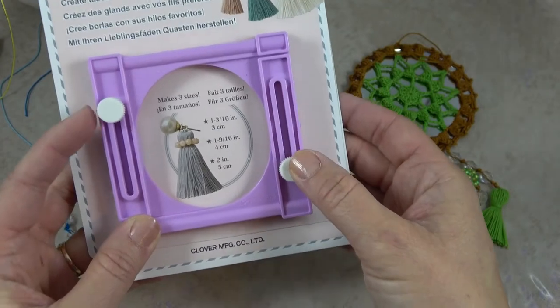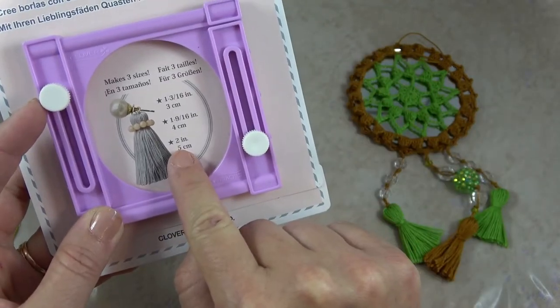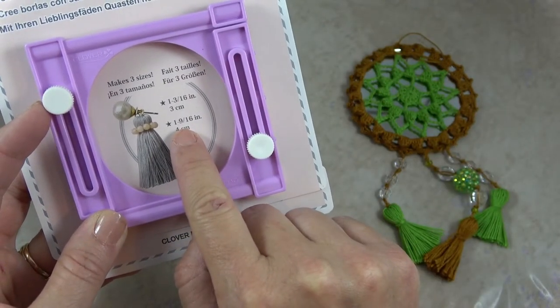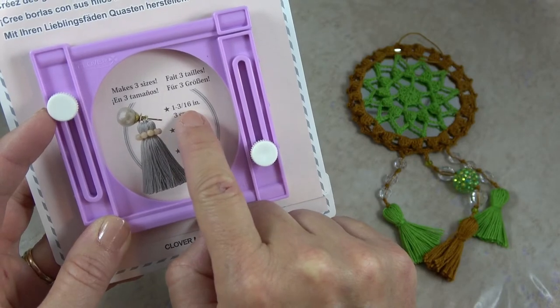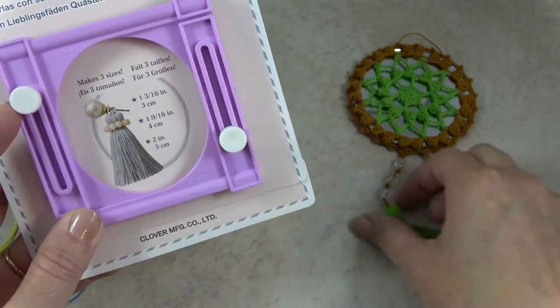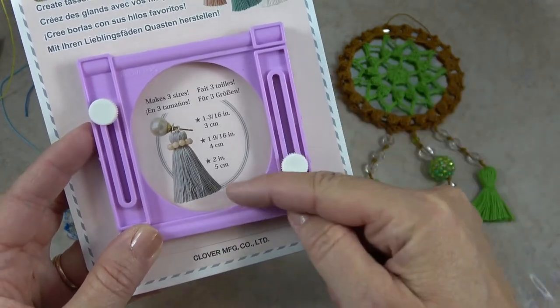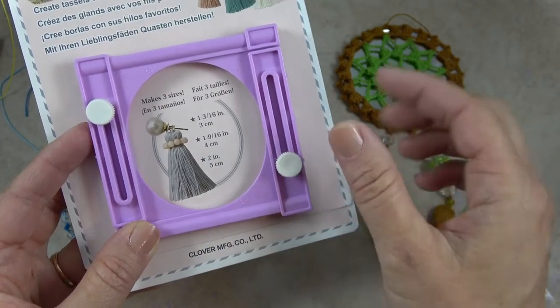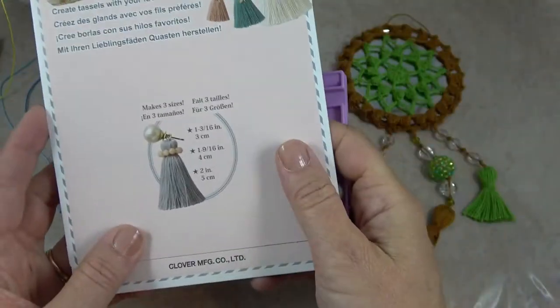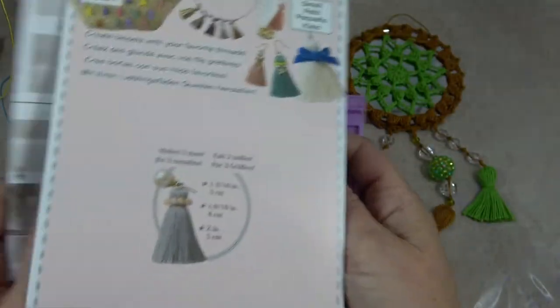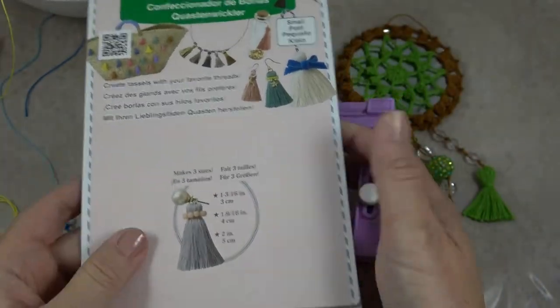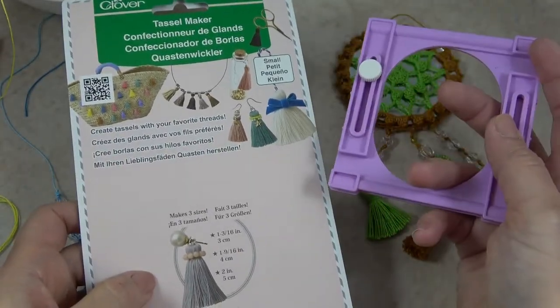This one makes three different sizes: two inch tassels, one and nine sixteenth, and one and three sixteenth. If you want one even smaller than that you put it on the smallest setting and then trim the tassel to the length that you would like. When you take it out of the package you also will find some instructions which could be helpful, but I'll show you all you need to know to make the tassels.